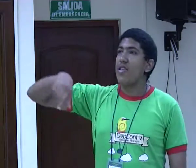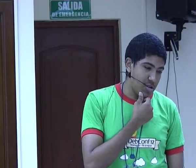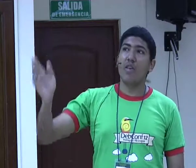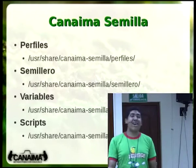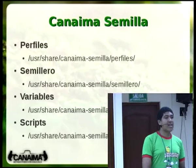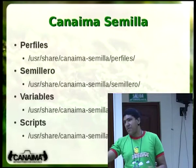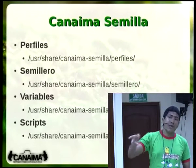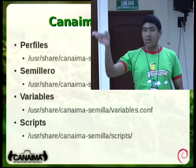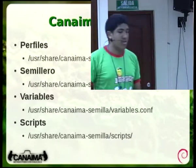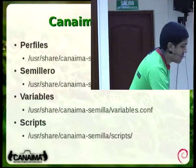Estos son algunos de los lugares más importantes de Canaima Semilla. Están los perfiles, donde se guarda la receta de cada sabor. El semillero, donde se guardan las ISO una vez que están listas. Algunas variables de configuración y los scripts. Estas últimas dos no se tocan usualmente, pero si alguna vez quieren saber dónde están los scripts o las variables —o modificar algún comportamiento de Canaima Semilla— ahí están.